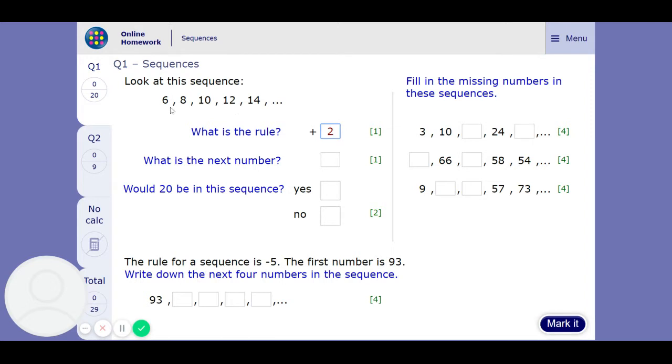What's the next number? So what's the number after 14? If we plus 2 on 14 we will get 16. Would 20 be in this sequence? So if we count on a little and see if we get to 20 or not. After 16 it would be 18, and then it would be 20. So yes, that's on there.